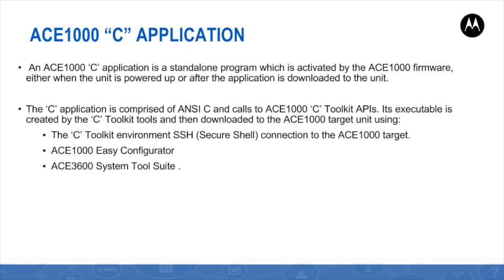A new C application starts its run as a separate Linux process once its download to the ACE1000 unit is completed successfully. A unit that completed its power-up runs all the C applications previously downloaded to it. A C application can be made up of only on-CC code, but in order to customize the ACE1000 unit operability, it should call various C toolkit APIs that are in fact Linux-based ACE1000 firmware services.